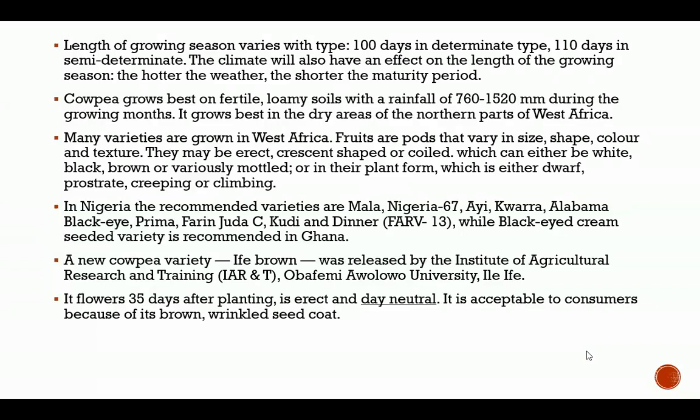The metabolic rate is also increased in hotter weather. When the weather is cooler or there is prolonged rainfall or increased cloudy skies, the rate of maturity will be slowed down because fewer assimilates can be attained on a cloudy day, prolonging the days needed to attain flowering. In summary, hotter climates lead to faster maturity, while cooler climates lead to longer maturity periods.